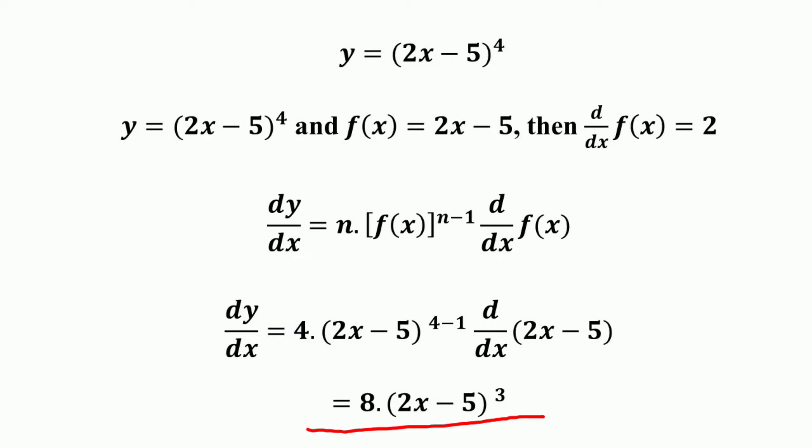If you multiply these, it will become 8 times (2x minus 5) whole raised to the power 3. This is the procedure for solving the given function using the generalized power function rule of differentiation.